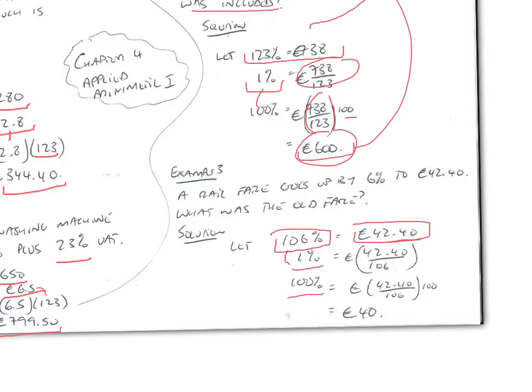So, therefore, 100%, which was the old fare, must be equal to 4240 divided by 106 times 100, which is 40 euros.